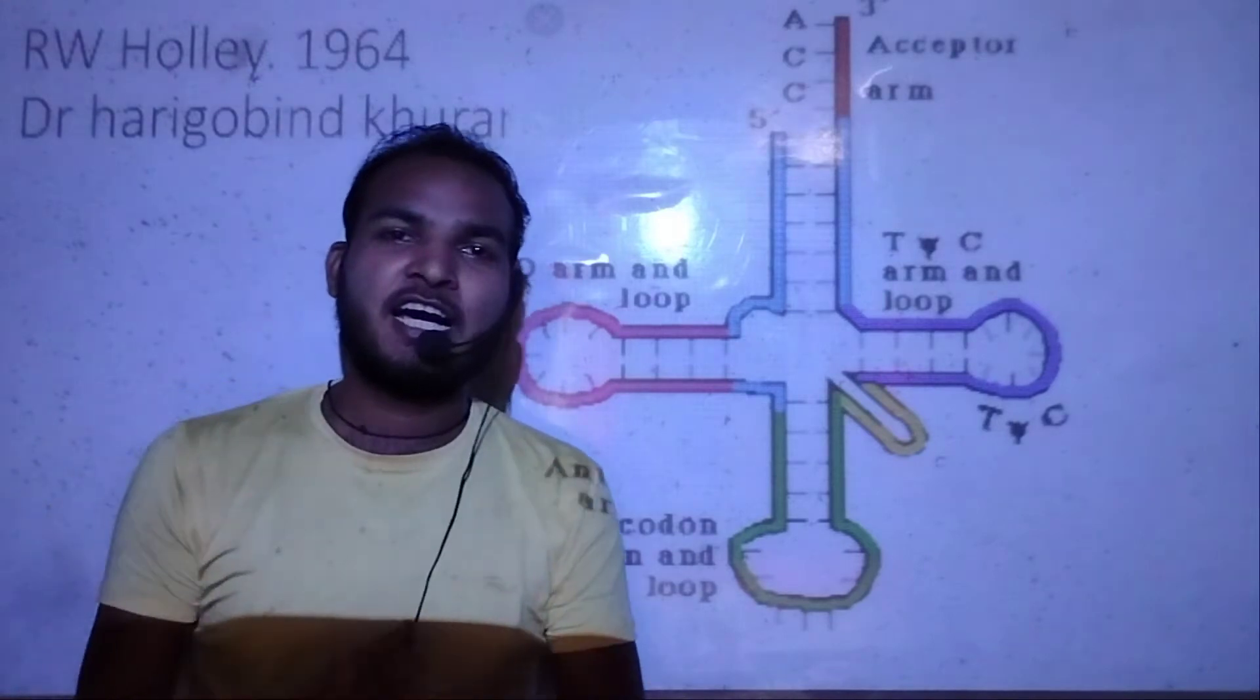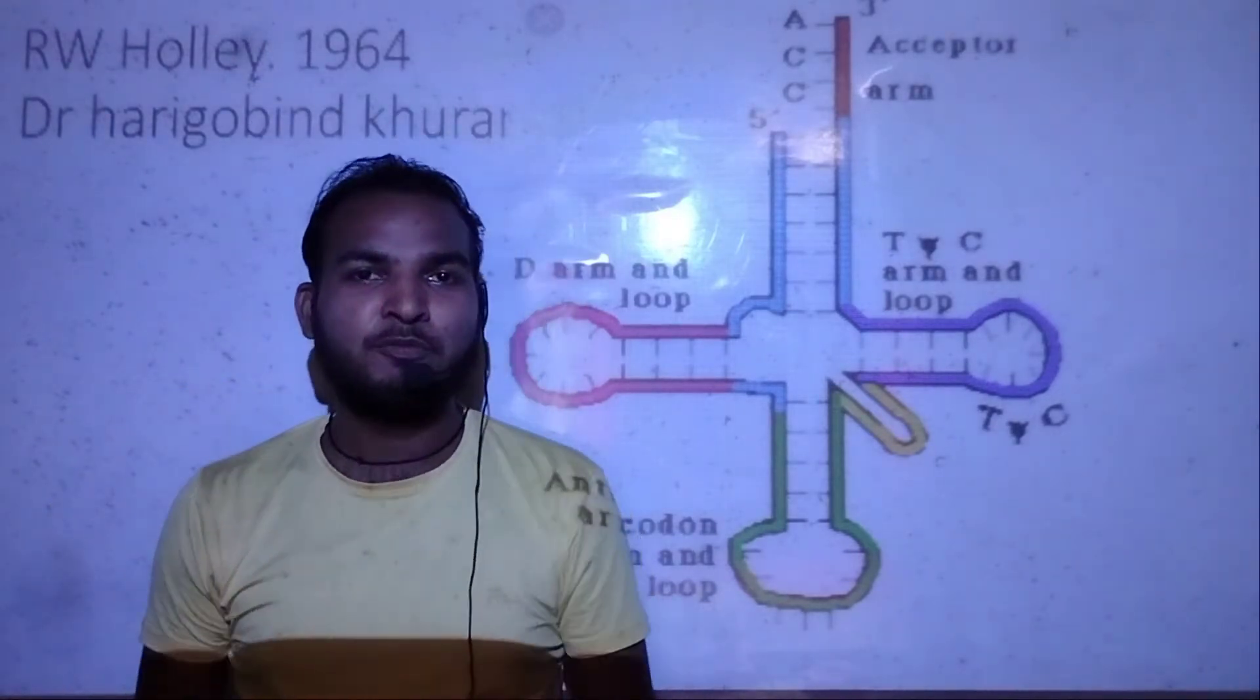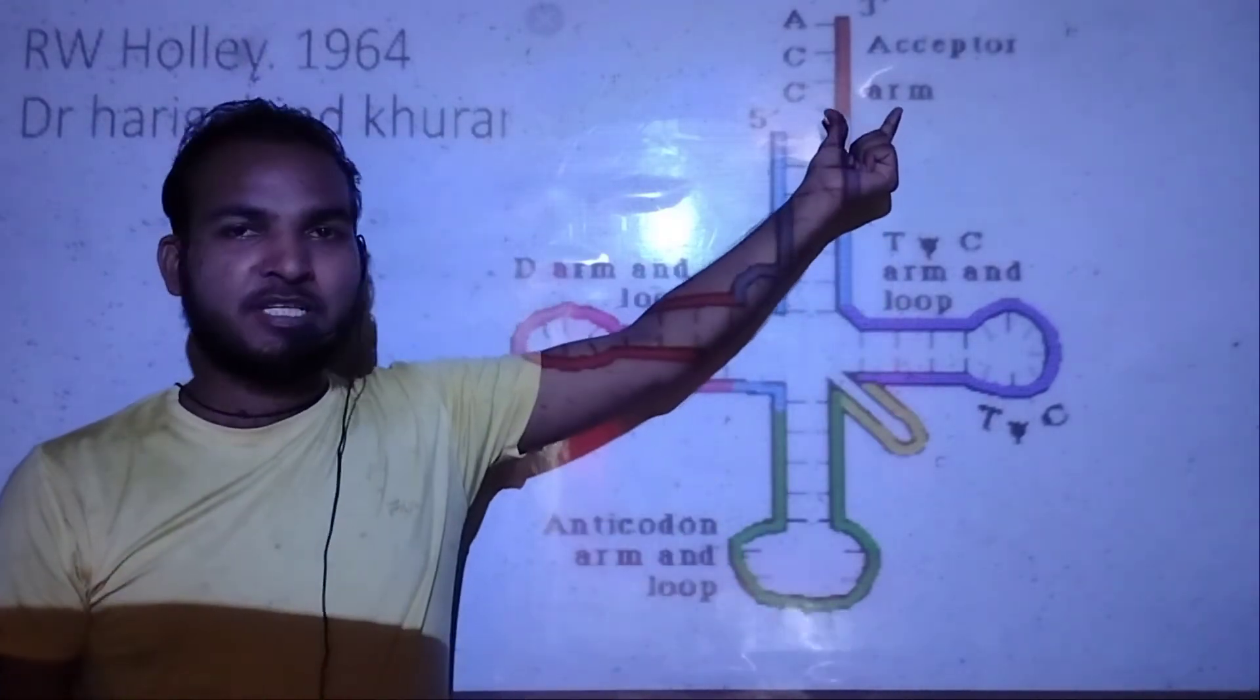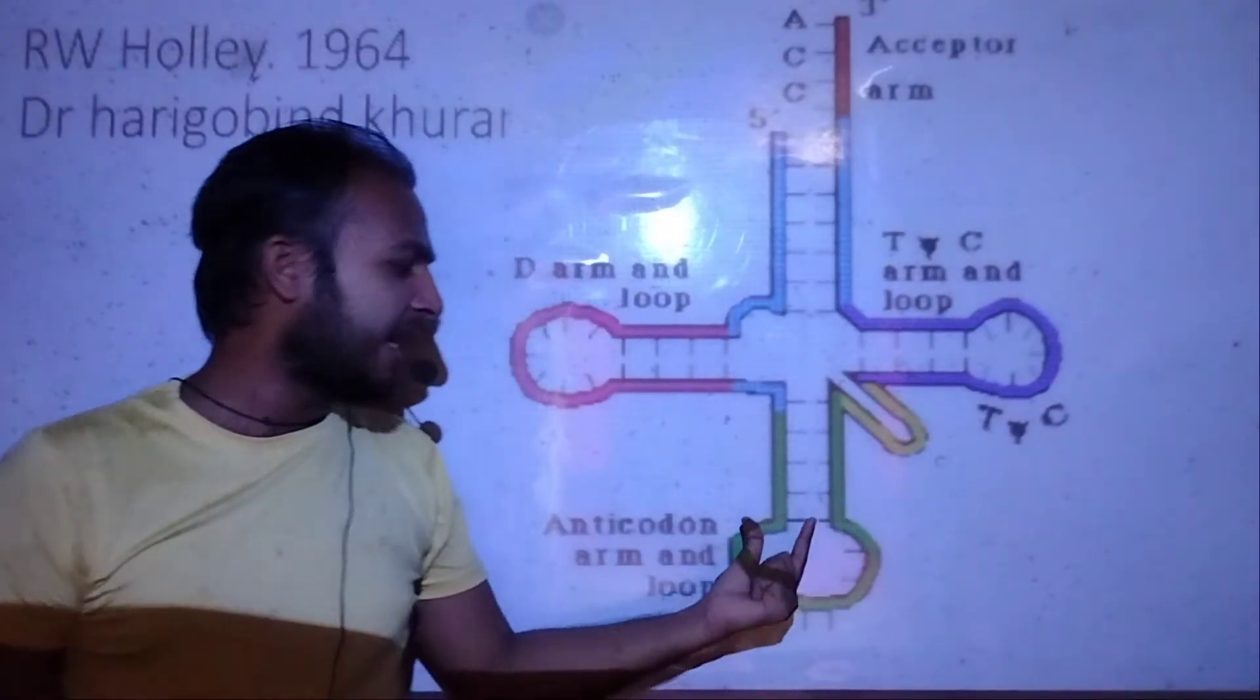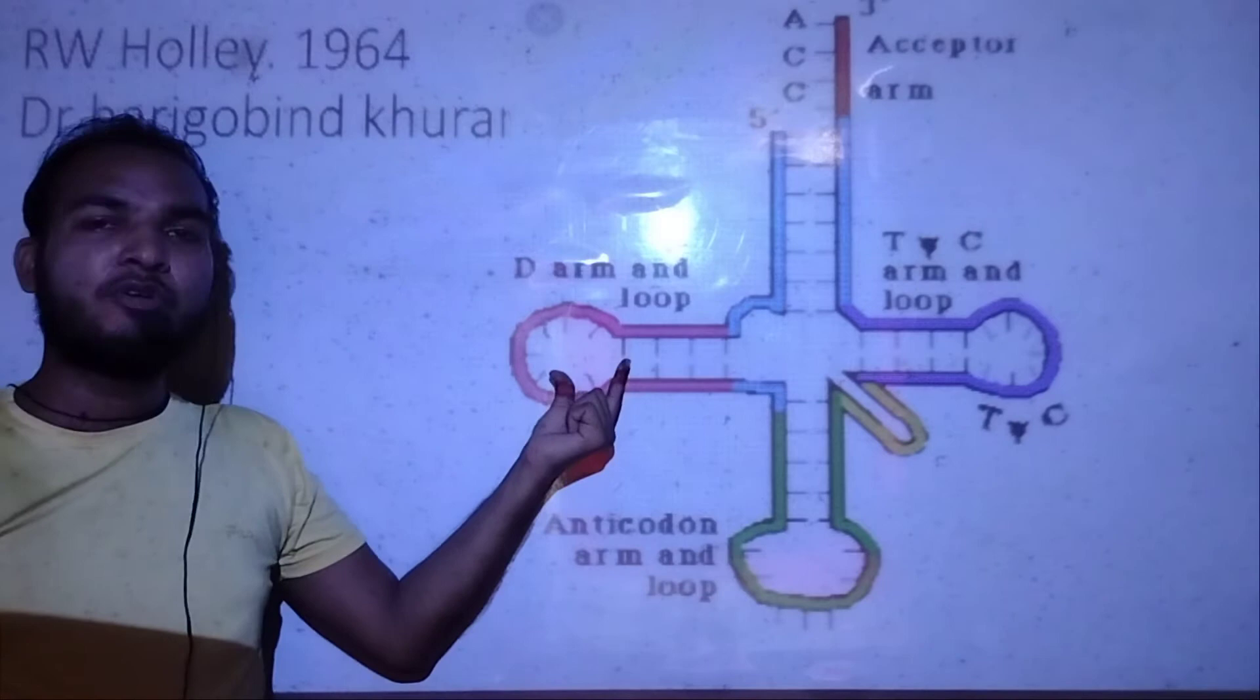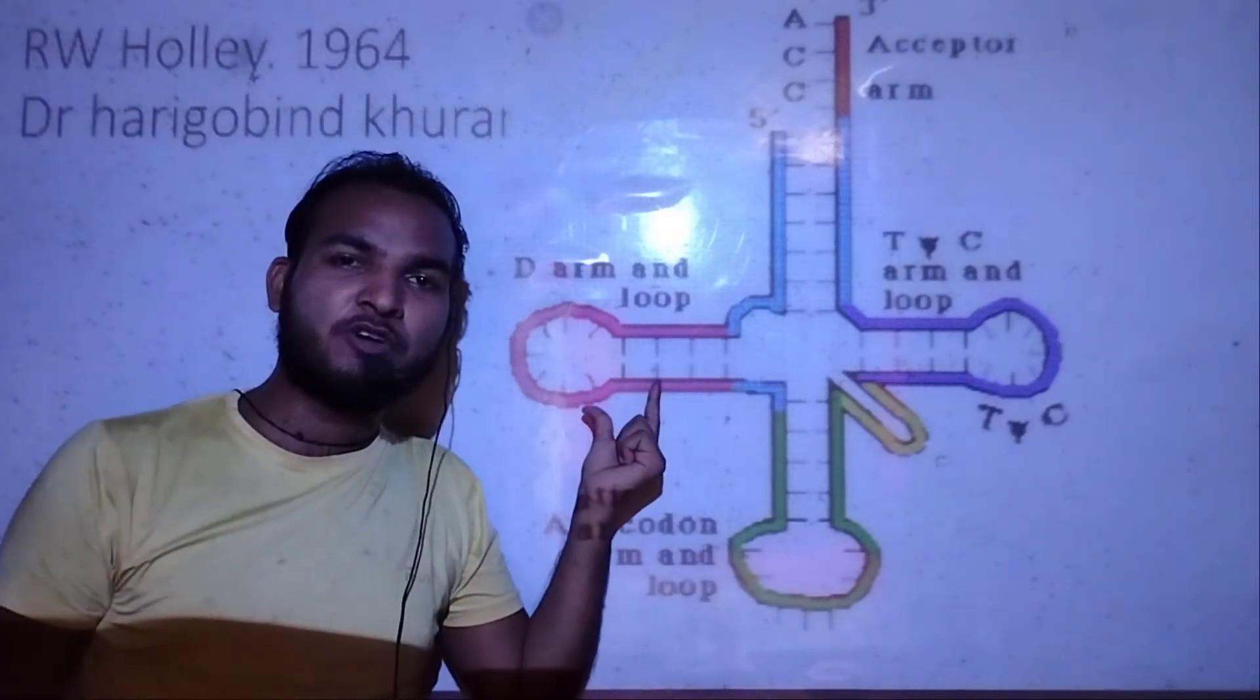The tRNA is made up of mainly four parts: the acceptor arm, second is the TψC arm, third is the anti-codonic arm, and fourth is the DHU or D arm.